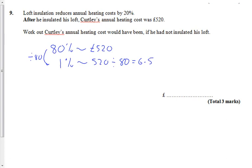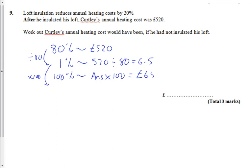Now leave that answer on your calculator, or use the answer button, because you're now going to step up. Whatever answer we just got, we want to get 100%. Using the answer button on the scientific calculator, multiply by 100, which means it's gone back up to £650.